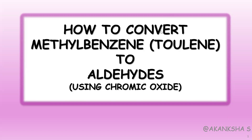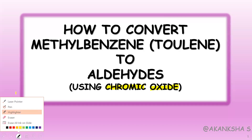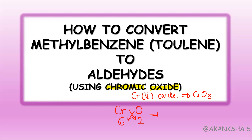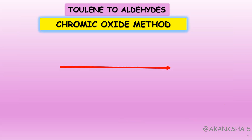In this session we are going to understand how methylbenzene, that is toluene, can be converted into an aldehyde — namely benzaldehyde. We are using a very specific reagent: chromium six oxide, given by the formula CrO3. Chromium's charge is taken as six, oxygen as two; cross-multiplying gives Cr2O6, which simplifies to CrO3.